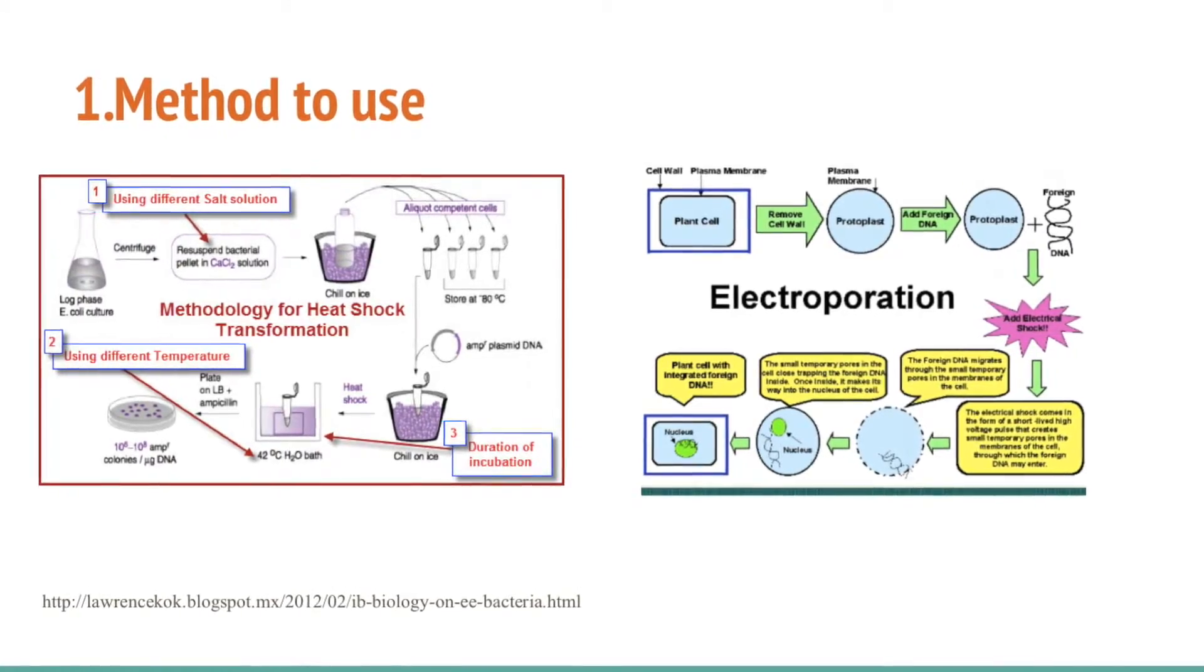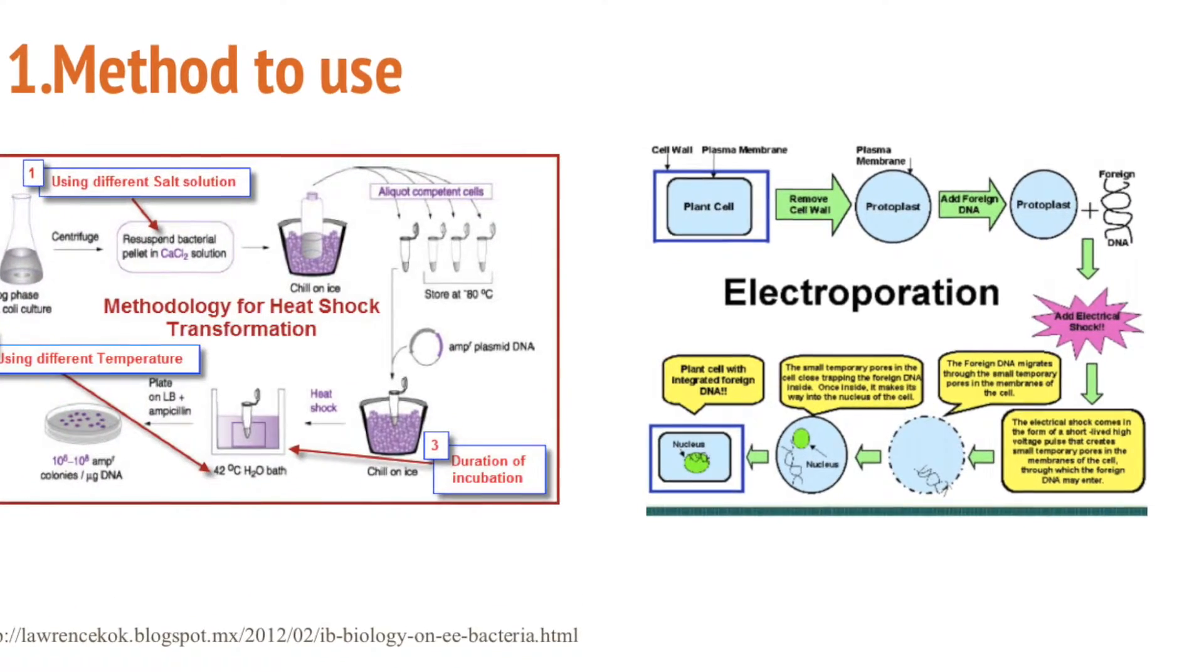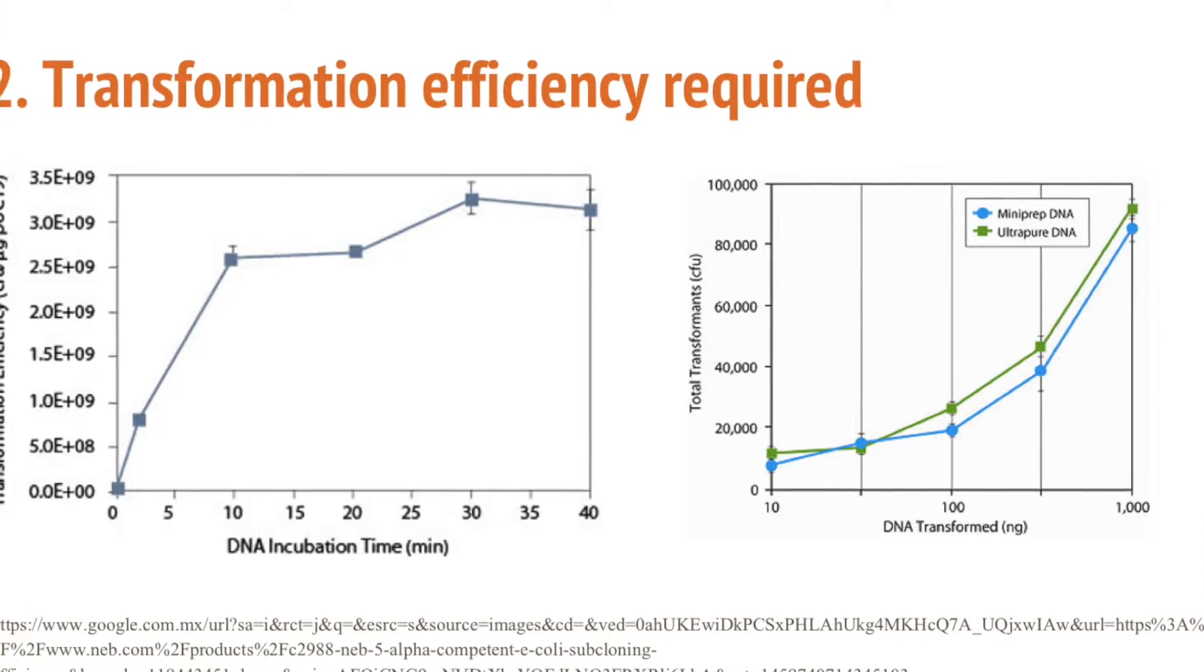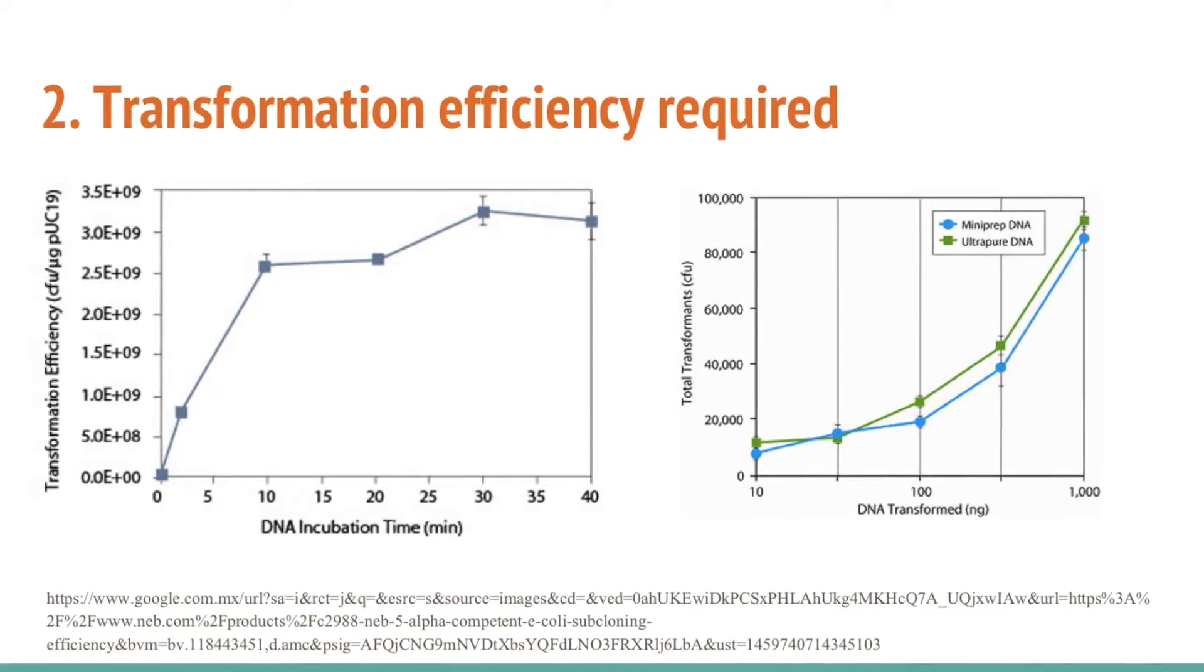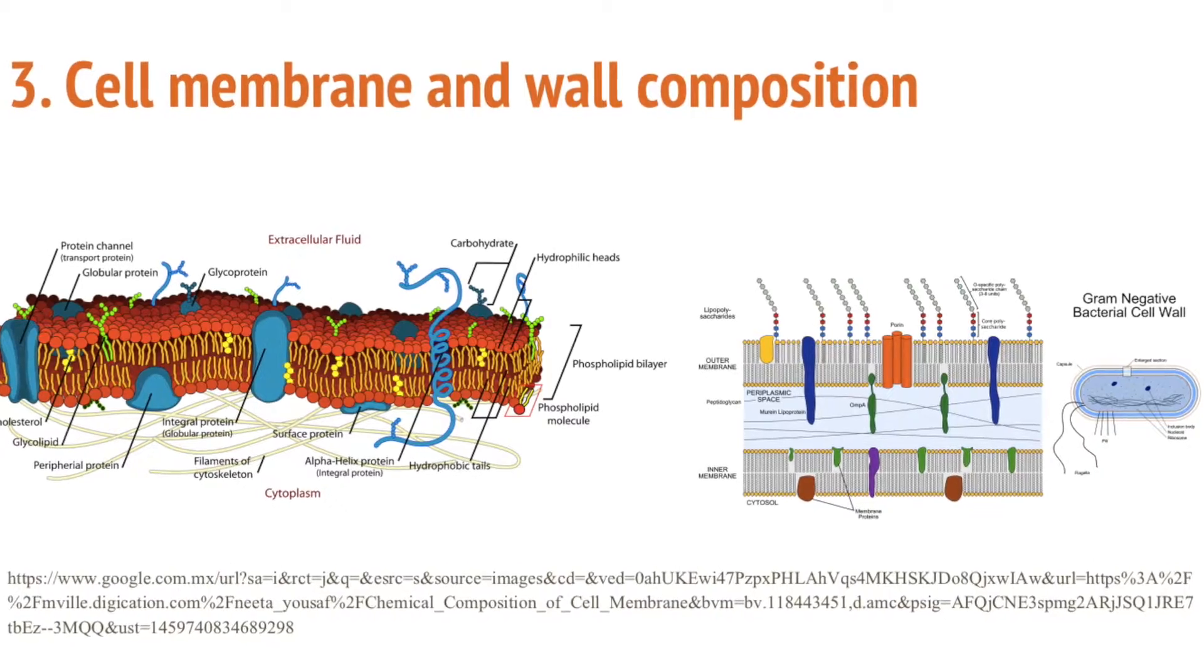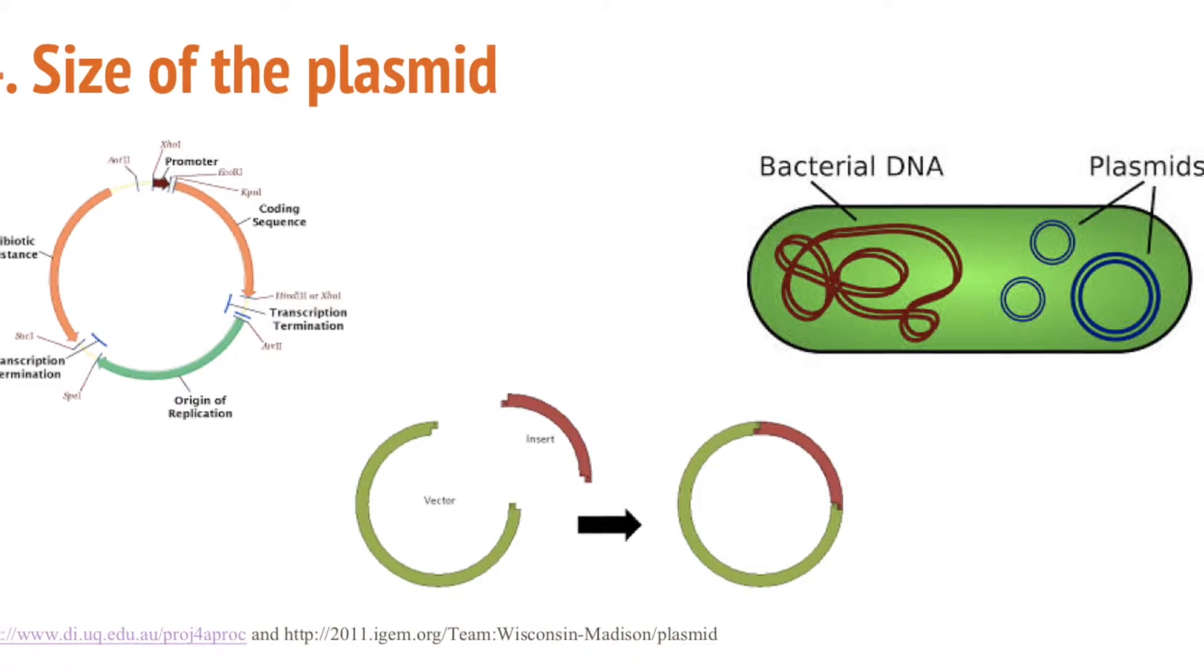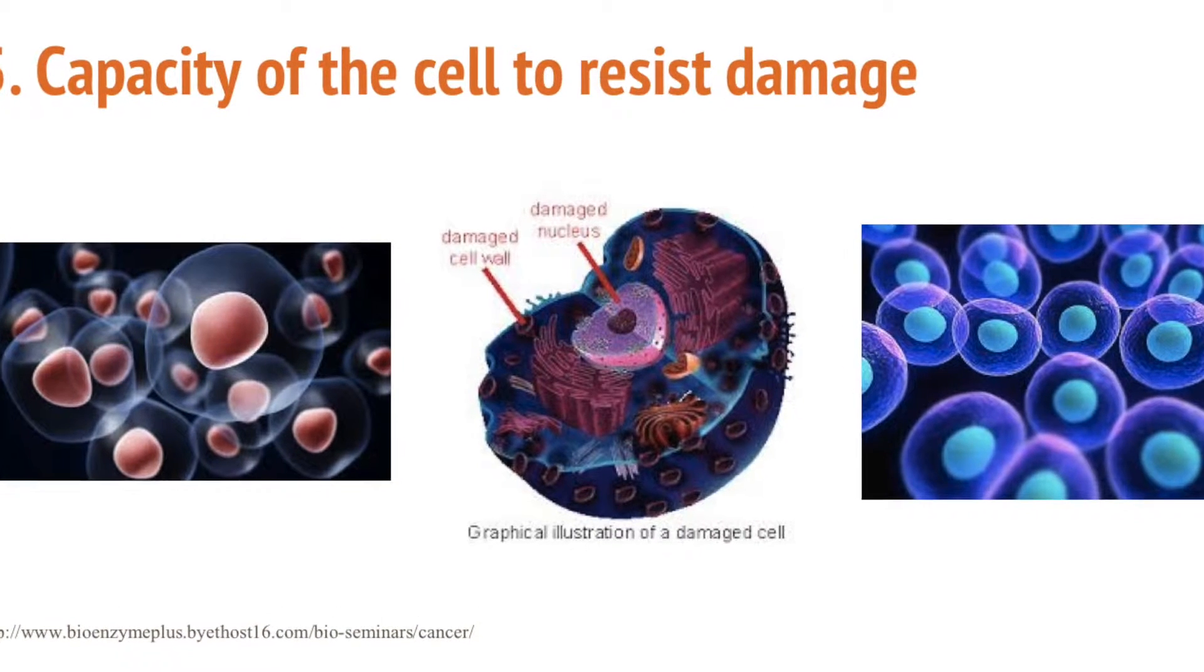Five things to consider when selecting a transformation method are: The method through which the cells became competent - if cells became competent by adding salts, electroporation equipment will damage them, making heat shock transformation the best option. Transformation efficiency is important since electroporation has an efficiency around 10^8 and chemical transformation has a maximum efficiency of 10^6. The cell membrane and wall composition are important since some components can be resistant to certain transformation methods. The size of the plasmid that will be introduced and the capacity of the cells to resist damage are important.